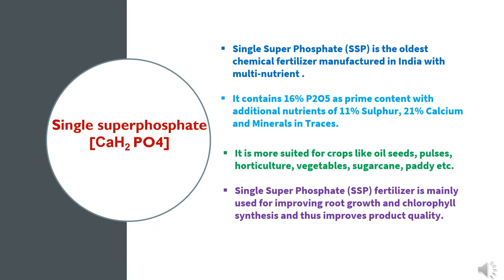The first water soluble Phosphatic fertilizer is single superphosphate, which is the oldest chemical fertilizer in India having multi nutrients. It contains 16% Phosphorus in the form of P2O5, 11% Sulphur, and 21% calcium. Single superphosphate is more suitable to crops like oil seeds, pulses, horticulture crops, vegetables, sugar cane, and paddy.